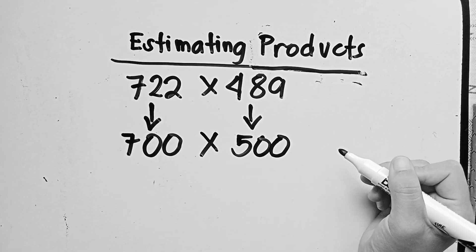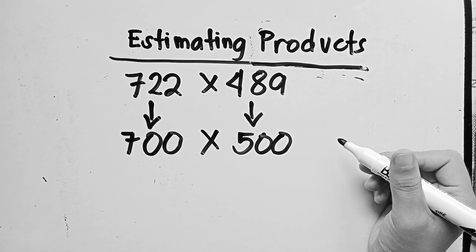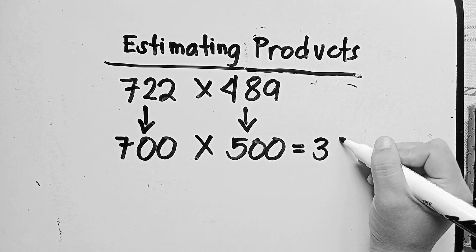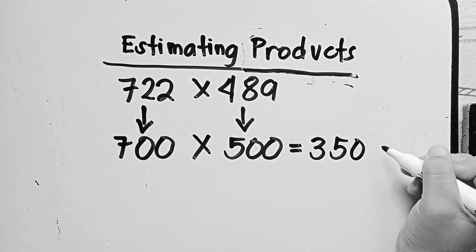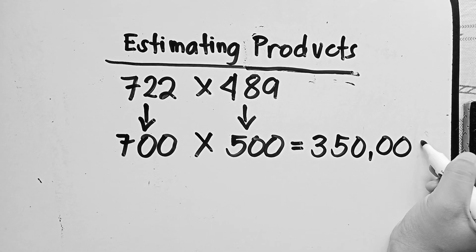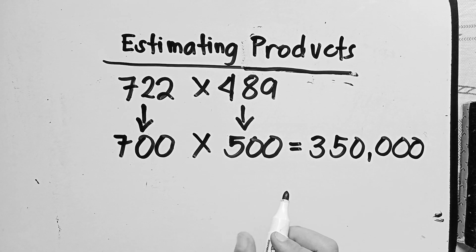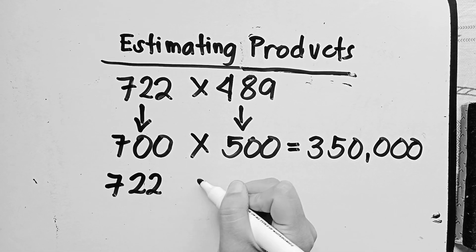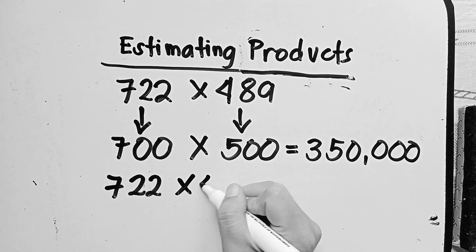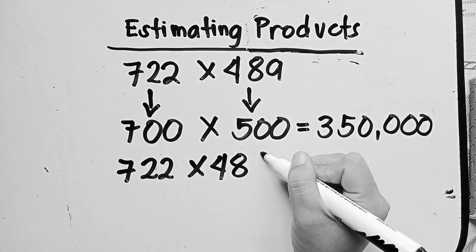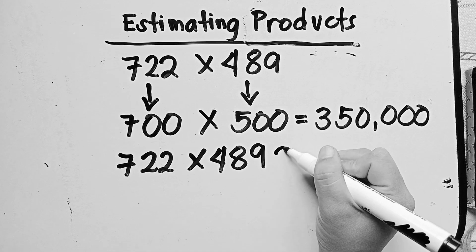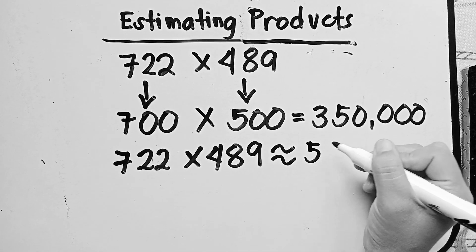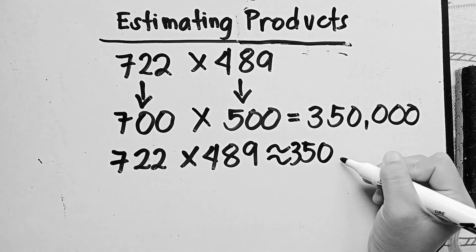So, if we multiply the two, we'll get 350,000. So, 722 multiplied by 489 gives us the approximate value of 350,000.